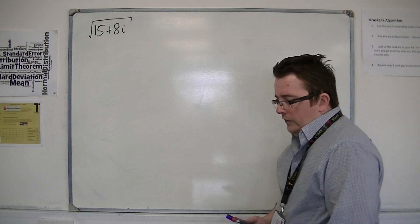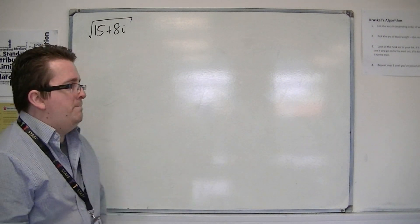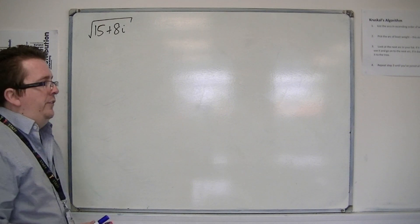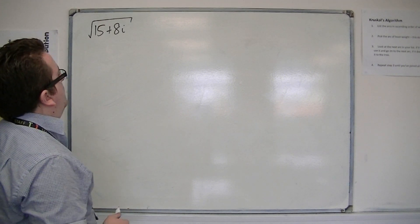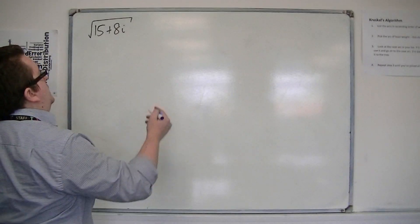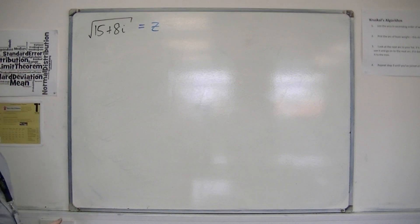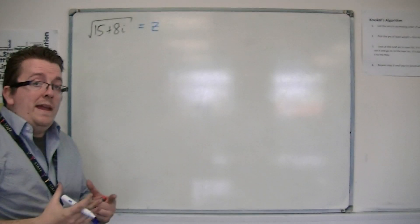So let's do it this way. Let's say that this is going to be equal to some value z, some complex number z. Now if I square both sides, I can say that 15 plus 8i is going to be z squared.